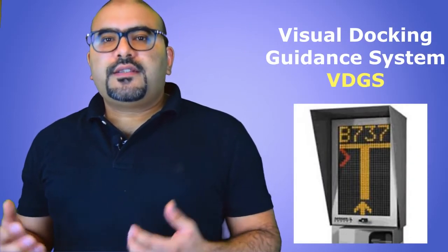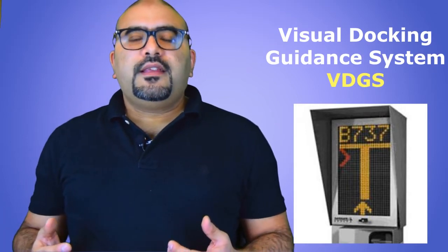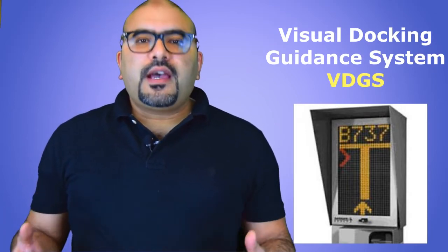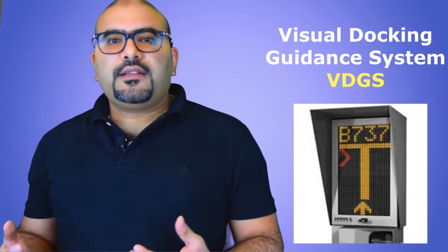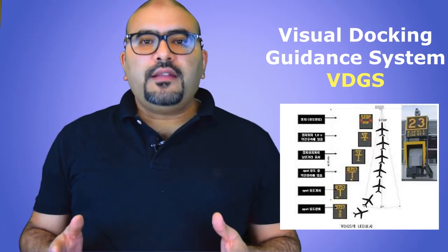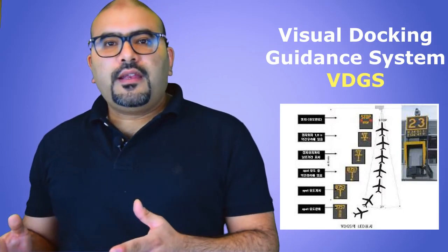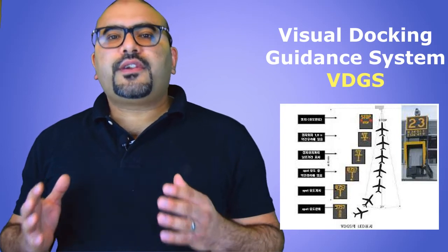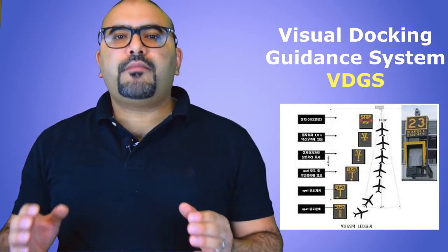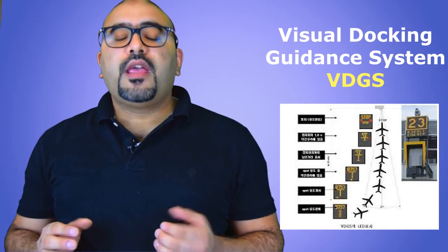The second system is the Visual Docking Guidance System, or VDGS. This system provides visual guidance to the pilot during docking to the parking stand, in order to keep the aircraft aligned on the lead-in line until the aircraft reaches the accurate and correct parking position.